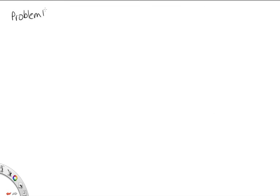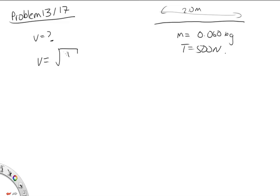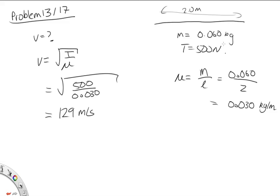Problem 13 for 1121, or 17 for 1131. We have a rope of length 2.0 m, mass 0.060 kg, with a tension of 500 N. The wave velocity is v = √(T/μ), where μ = mass/length = 0.060/2.0 = 0.030 kg/m. So v = √(500/0.030) ≈ 129 m/s, which to two significant figures is 130 m/s.